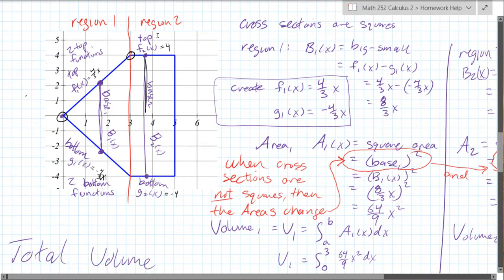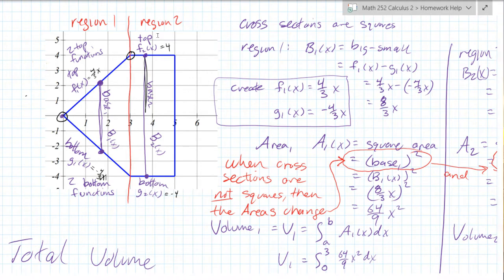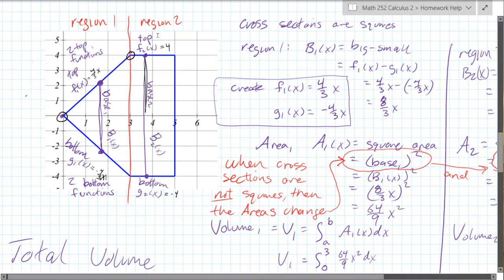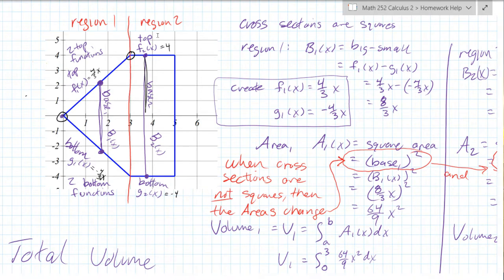Now, we have to get the area, and this is the area of region one. So how do we do that? Well, the area is gonna be a square, and good news is we know the base. And how do you get the area of a square? Well, it's the base times the base, or the side times the side, or side squared.